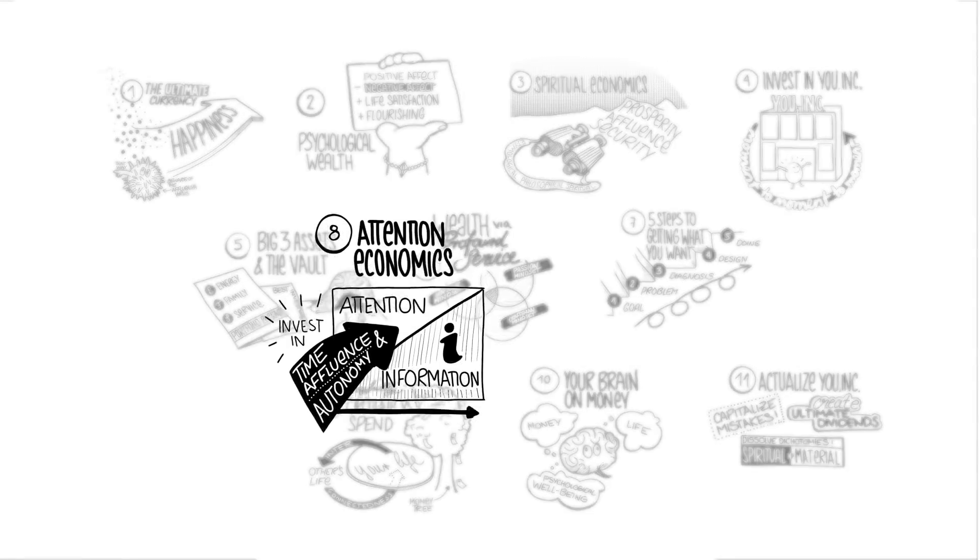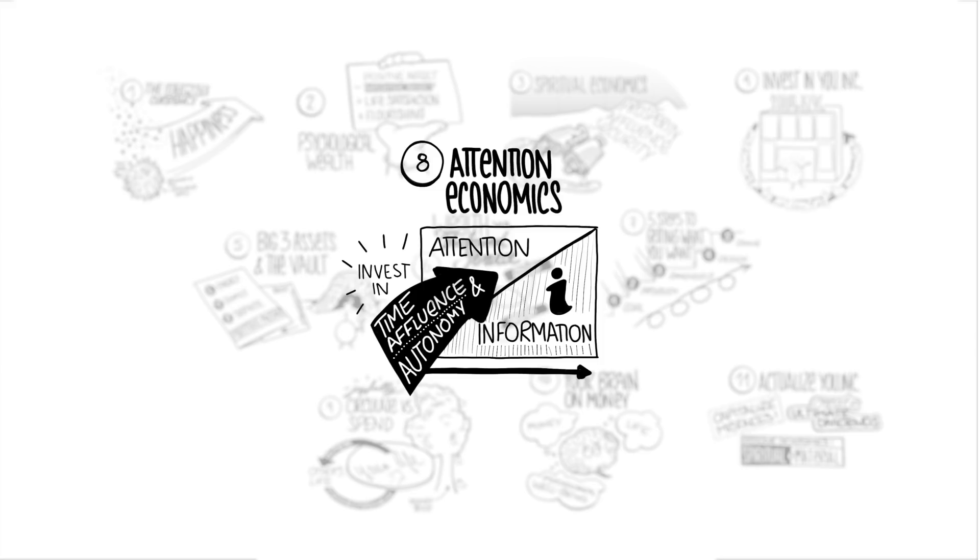Our eighth big idea is attention economics. We have spiritual economics, then we're going to talk about attention economics, specifically Herbert Simon. In 1971, Herbert Simon told us that a wealth of information was creating a poverty of attention. We're going to talk about why that matters today more than ever before if you want to execute and actualize your potential. We're also going to talk about where you want to invest your attention in time affluence and autonomy. Shift from buying stuff to buying time affluence and buying autonomy.